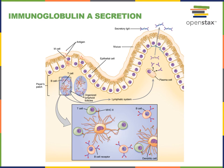Plasma cells will start secreting antibodies, and some of the antibodies secreted will be the immunoglobulin A (IgA) secretory antibodies — antibodies that will be secreted along with mucus through the exocrine gland at the mucus membrane. These IgA antibodies can then bind to antigens on the surface of pathogens that are trying to enter the body or an infection at the surface of a mucus membrane.